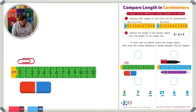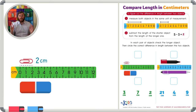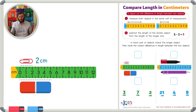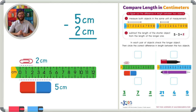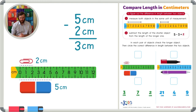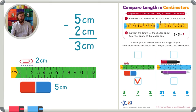Let's look at our first two objects: a paperclip and an eraser. The paperclip starts at zero and goes to two centimeters, so the paperclip is two centimeters long. The eraser is five centimeters long. We put the bigger number on top: five minus two equals three, so the difference in lengths is three centimeters. The eraser is bigger because it's five centimeters versus two, so we check the eraser and circle three centimeters.